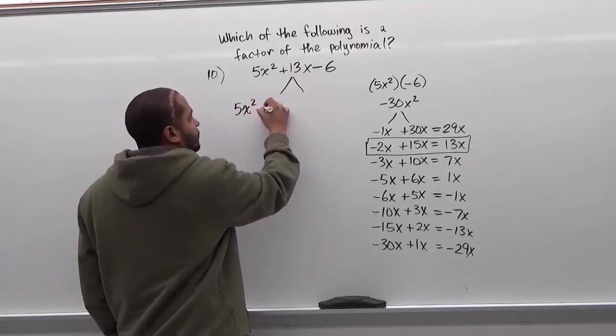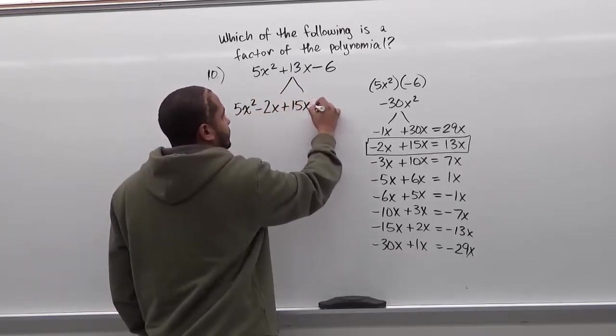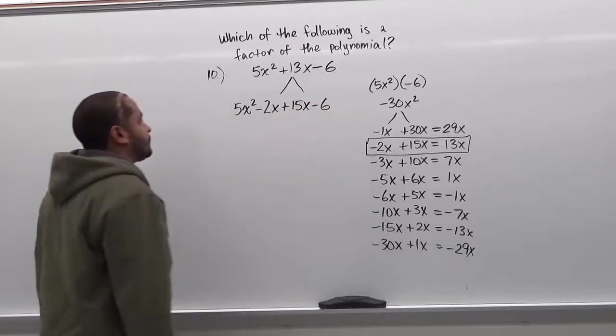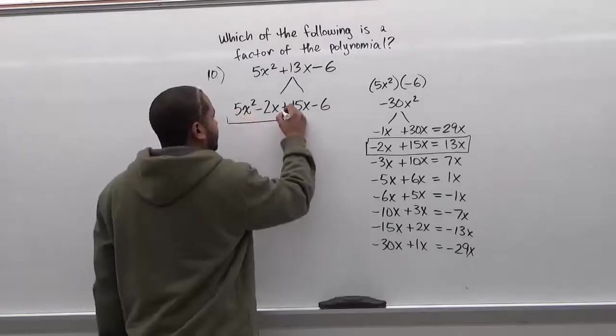So we have 5x squared minus 2x plus 15x, take away 6. And now what we're going to do is we're going to separate this into two groups so we can factor each group by pairs.